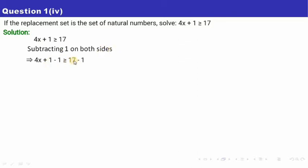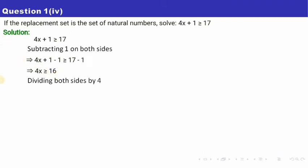Subtracting 1 on both sides: plus 1 minus 1 cancels, giving us 4x on the left, and 17 minus 1 equals 16 on the right. Now we still have 4 here, so we divide both sides by 4. Since we are dividing by a positive number, the sign of inequality does not change.